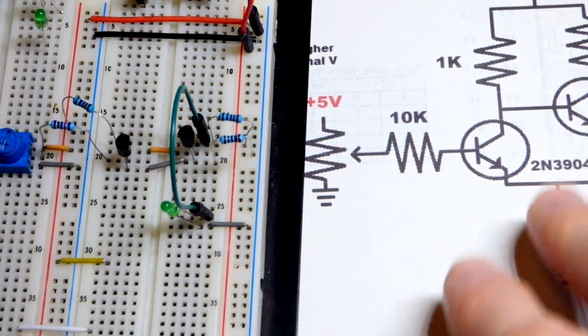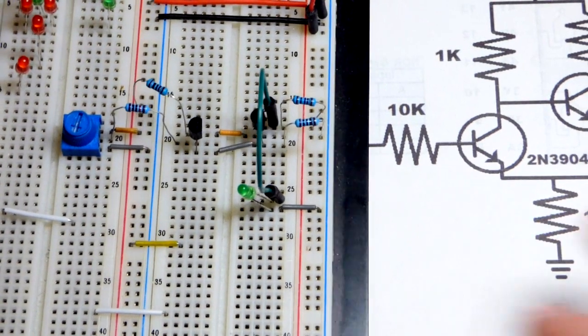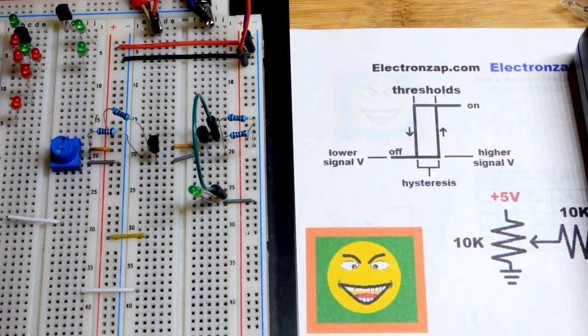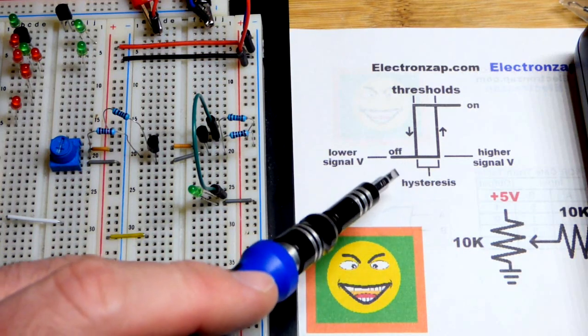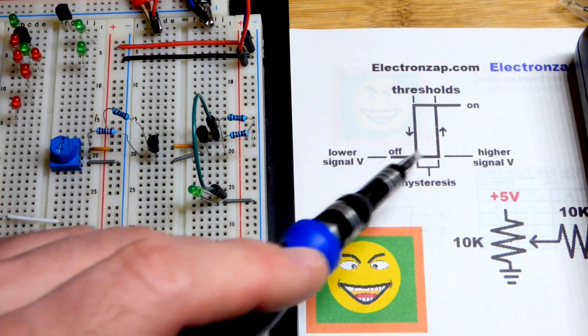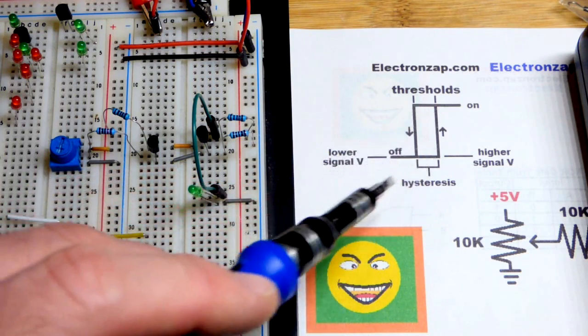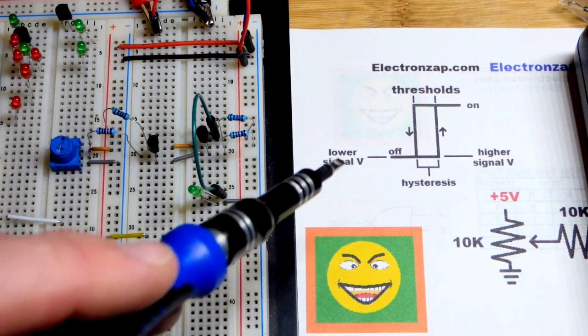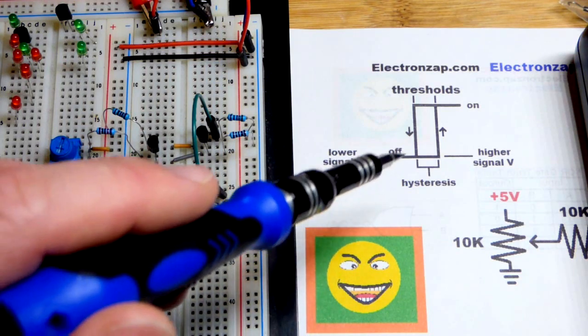While you're studying Schmidt triggers and electronics hysteresis, you're going to see something like this right here. I added some more writing and stuff, but in any case right now we're down below the point we need to turn the LED on.